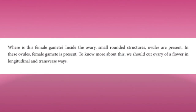Where is this female gamete? Inside the ovary, small rounded structures called ovules are present. In these ovules, the female gamete is present. To know more about this, we should cut the ovary of a flower in longitudinal and transverse ways.